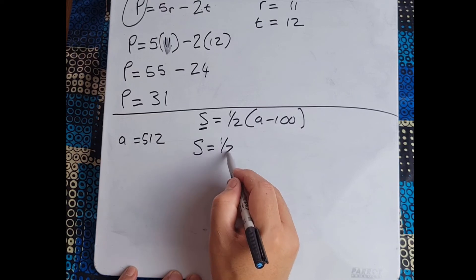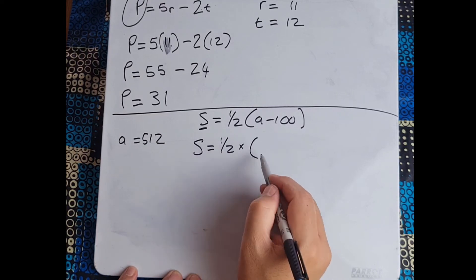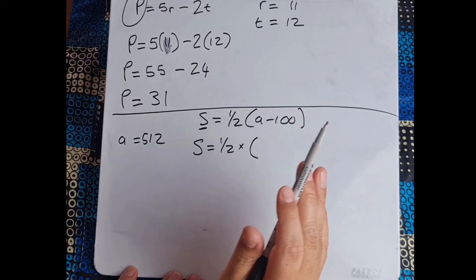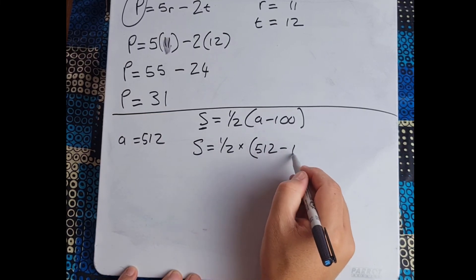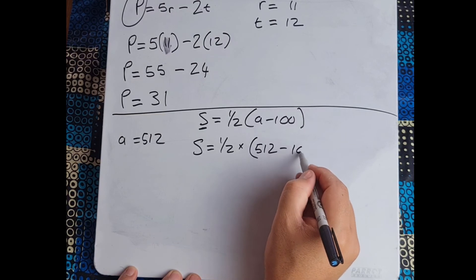So here we go. S equals a half and we know that's going to be multiplied by whatever the answer is in our brackets. Please don't forget BODMAS, we do our brackets first: 512 minus 100.